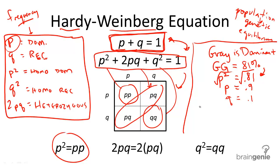But we're not finished yet. We know p, we know q. But all we have is the frequency for homozygous dominant alleles. Since having gray fur is dominant, it can also be heterozygous, represented by big G, little g.